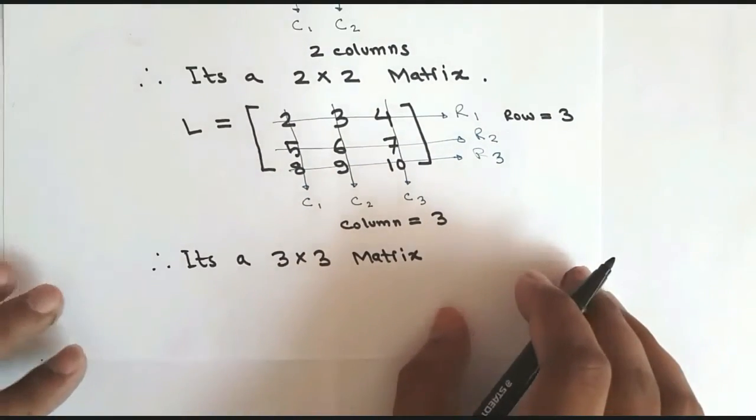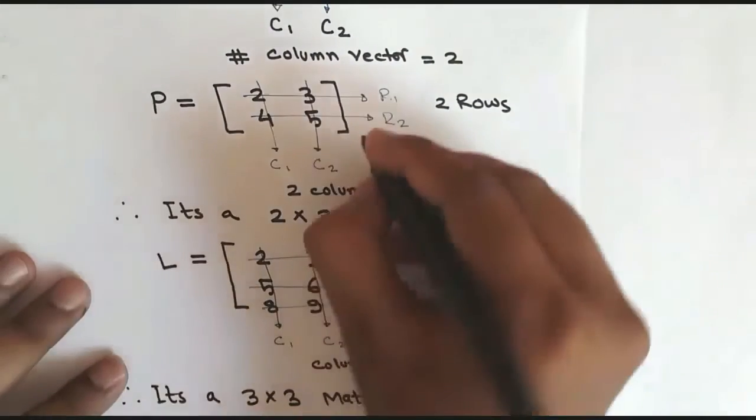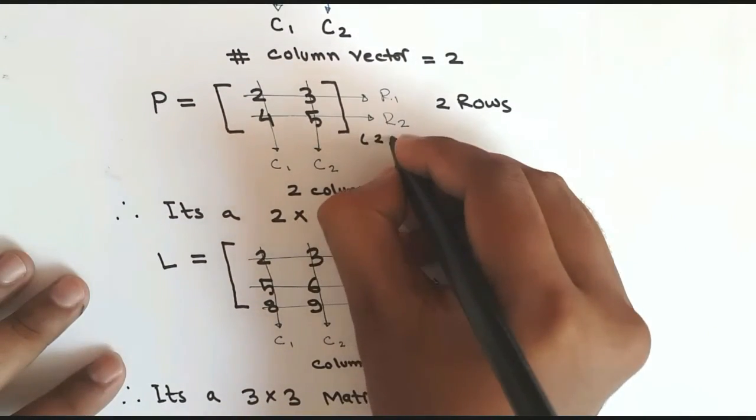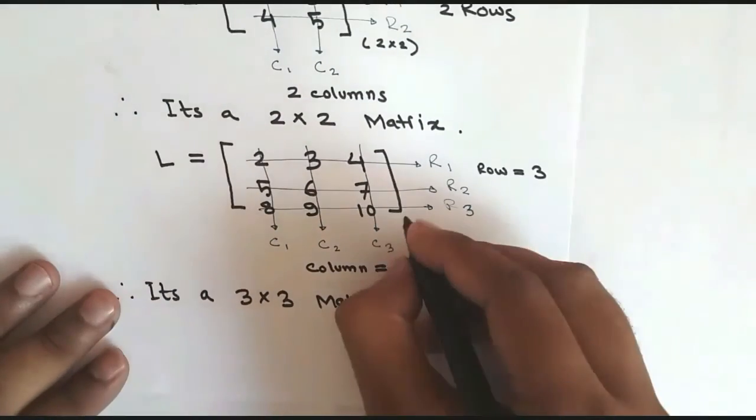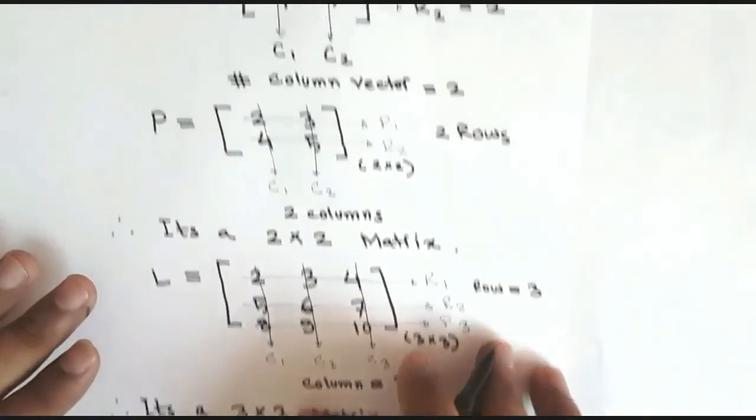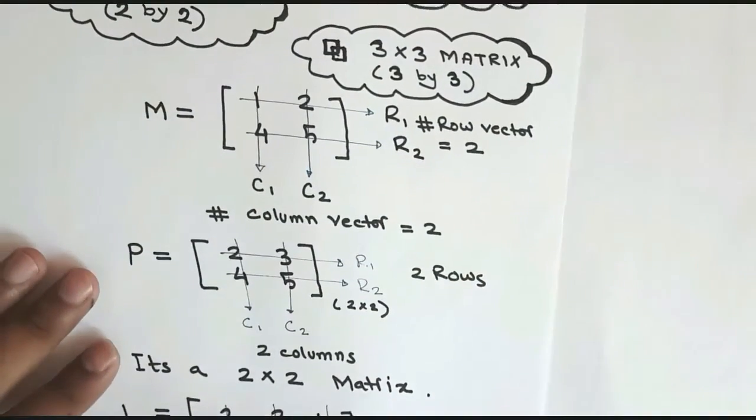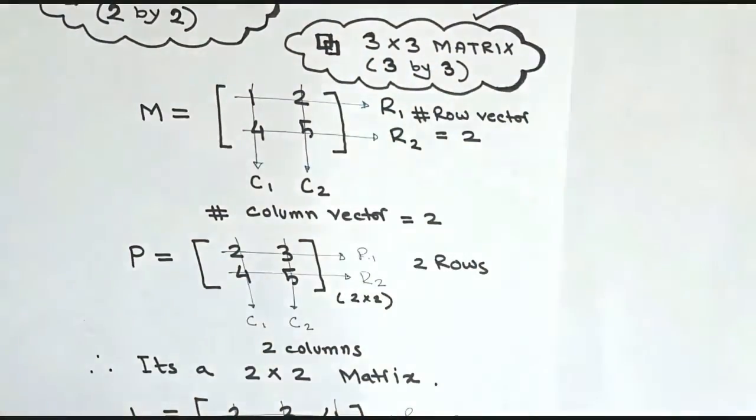So we have completed our two by two matrix and we'll be writing it at the bottom of the matrix. So this shows that it's a two by two matrix and it's a three by three matrix. So we have completed our three by three matrix. It's really simple, it's not that hard, once you get used to it it will be very easy to understand.